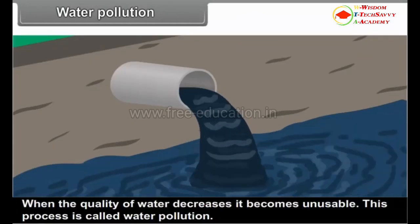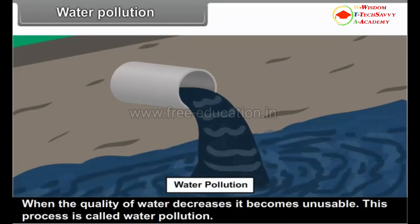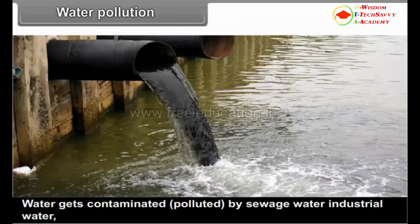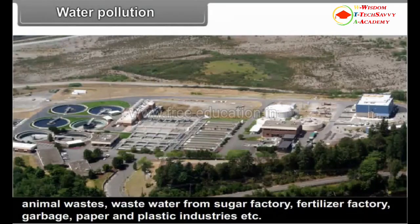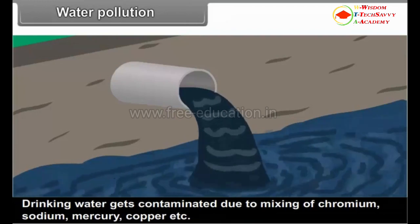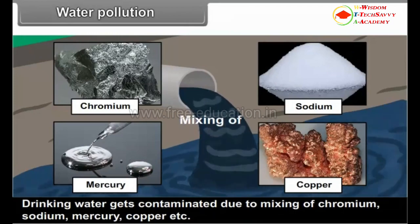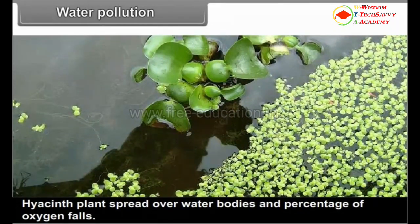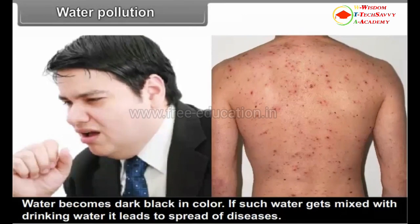Water Pollution: When the quality of water decreases, it becomes unusable — this process is called water pollution. Water gets contaminated by sewage water, industrial water, animal wastes, wastewater from sugar factories, fertilizer factories, garbage, and paper and plastic industries. Drinking water gets contaminated due to the mixing of chromium, sodium, mercury, copper, etc. Hyacinth plants spread over water bodies cause oxygen levels to fall and water becomes dark black in color. If such water mixes with drinking water, it leads to the spread of diseases.